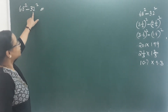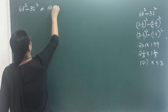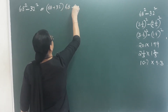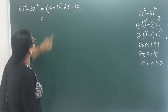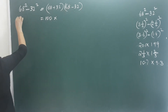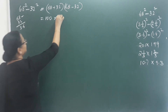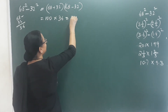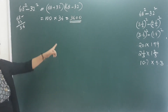Then we have a square minus b square, that is a plus b into a minus b. What do we do here? We add: 68 plus 32 is 100, and 68 minus 32 is 36. So 100 into 36 equals 3,600. The answer is 3,600.